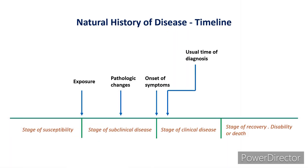This is the timeline of natural history of disease. There are basically four stages: stage of susceptibility, stage of subclinical disease, stage of clinical disease, and stage of recovery, disability, or death.